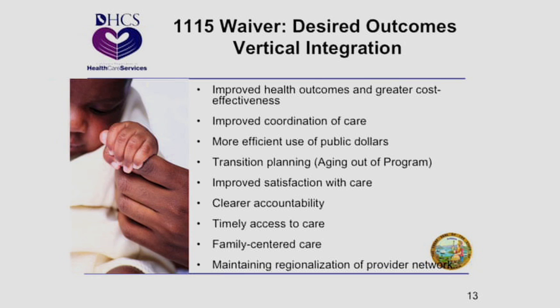We want to figure out transition, use public dollars wisely, and have satisfied customers — the doctors, the families, the patients, the providers. There needs to be accountability and we're measuring access to care. We really want to get to family-centered care, having the medical home in a vertically integrated manner. We're not there yet. Maintaining the regional provider network is something CCS has been very strong about. The goal of the Affordable Care Act is not to dismantle that — it's to strengthen it. Maintaining the right patient in the right place with the right provider is still first and foremost of our program.